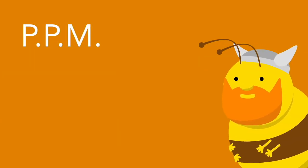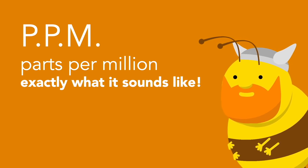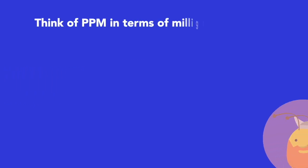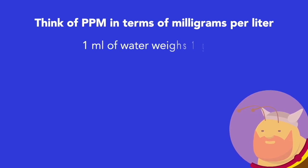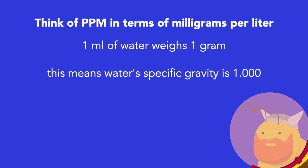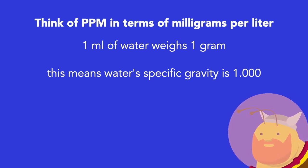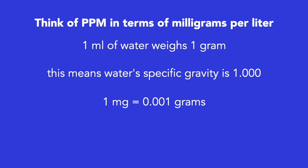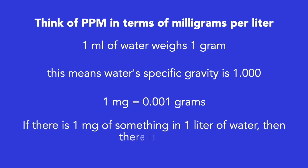What is PPM? PPM stands for parts per million, and it's exactly what it sounds like. In a rudimentary sense, if you've got a tank of water that weighs a million pounds and you toss in a fish that weighs one pound, your tank has one part per million of fish. In the context of water, when we talk about PPM, we're talking about milligrams per liter. One milliliter of water weighs one gram, meaning water's specific gravity is 1.000. For those Americans who don't typically use the metric system, one milligram is 0.001 grams. So if there's one milligram of something in one liter of water, there is one part per million of that substance in that water.